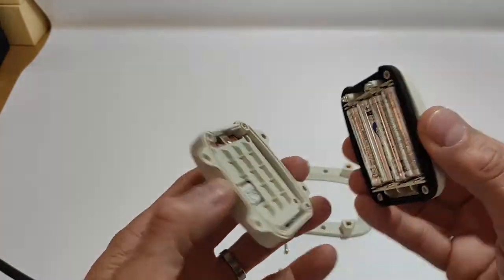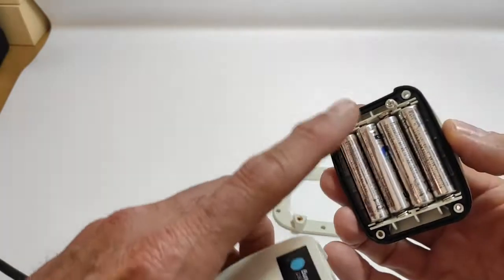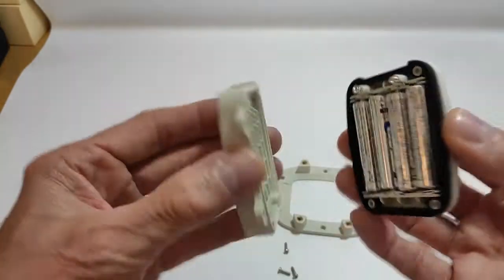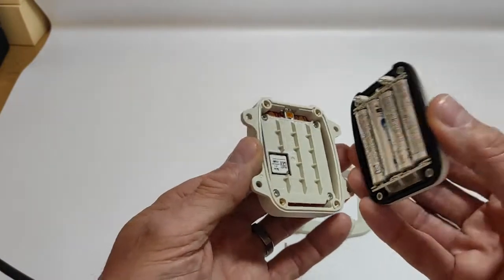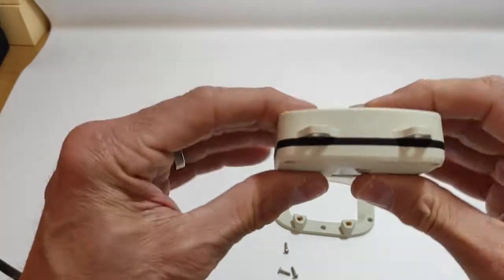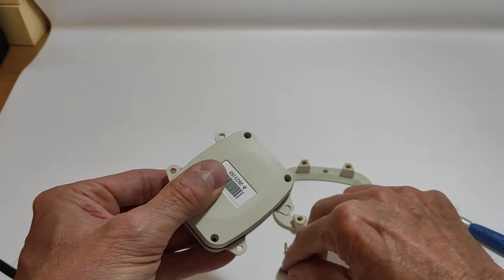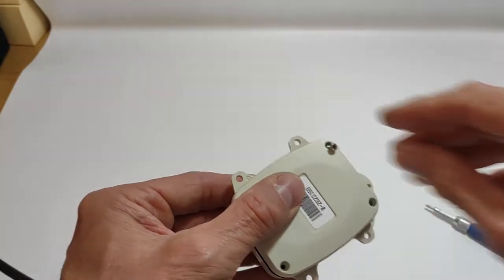Put the device back on the other side. You have two contacts here, two contacts here. Just make sure that they are placed back on the correct side. Close the device properly, make sure everything is okay with the joint, and just screw back the screws.